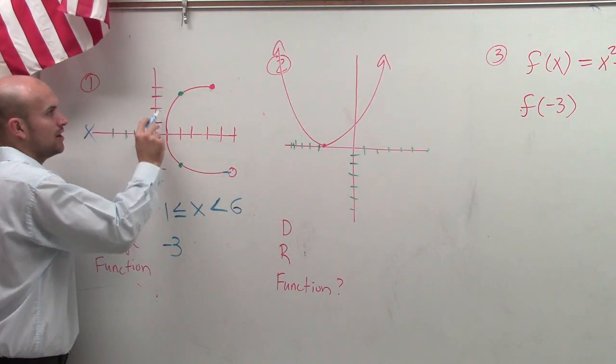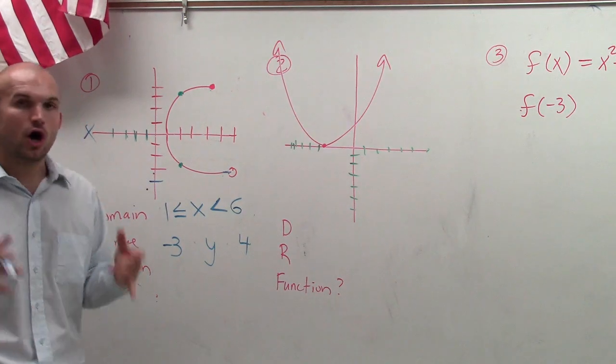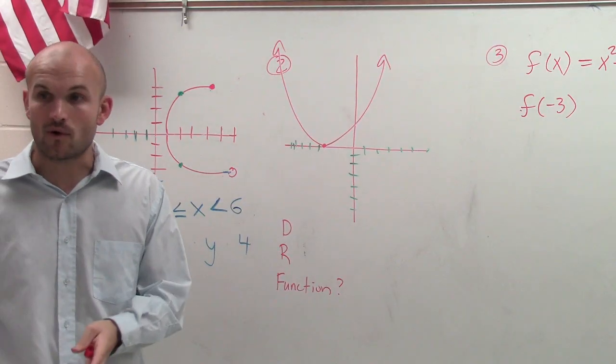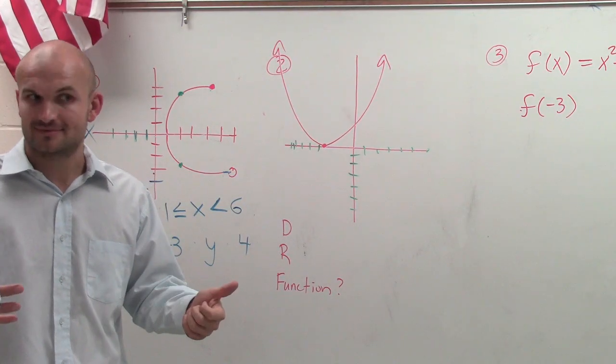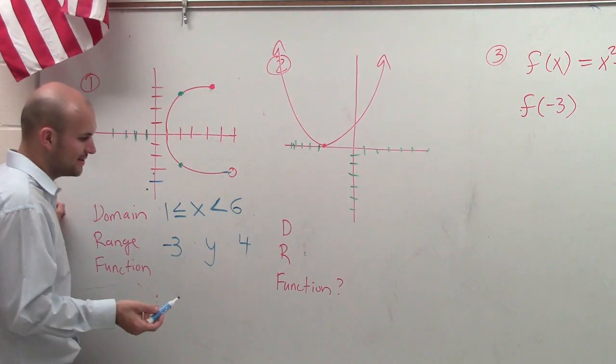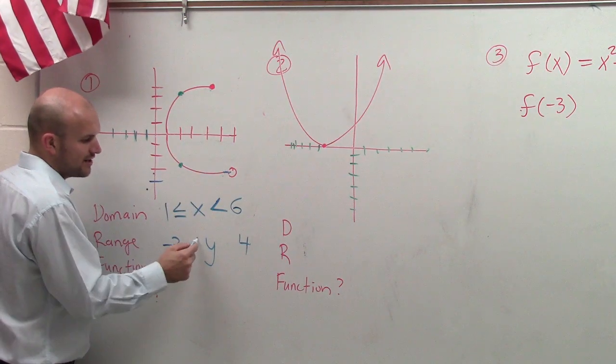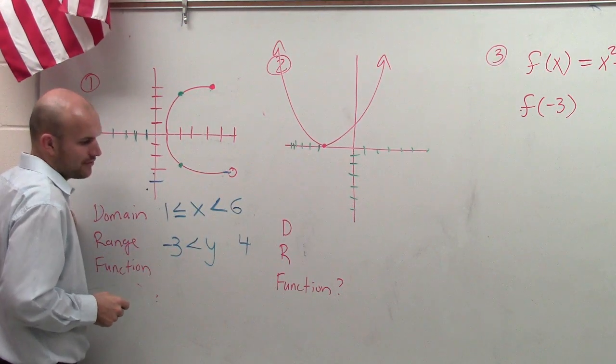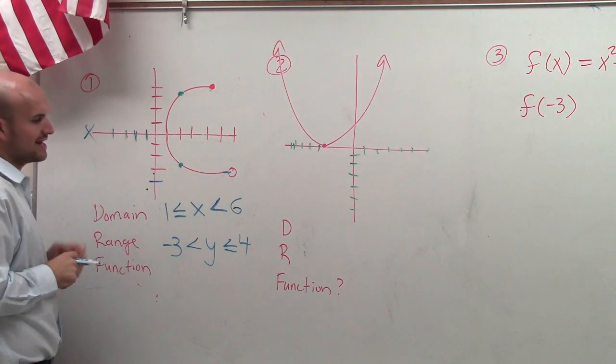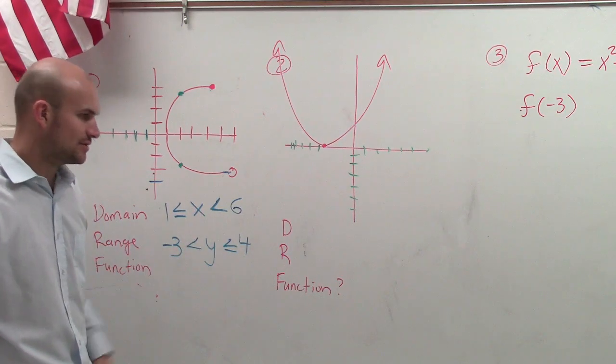And the largest y value is 1, 2, 3, 4. So that means my y values, all my y values that make up this graph, are between negative 3 and 4. Make sense? So what we look at here now is, remember, at negative 3, I have this open circle. So therefore, it's just going to be greater than negative 3. However, at 4, I have this solid dot, and it also goes through it. So we could say it's going to be y has to be greater than negative 3, but less than or equal to 4.